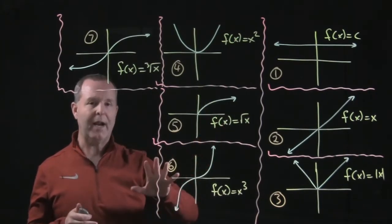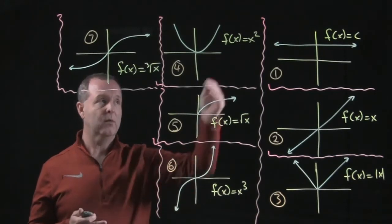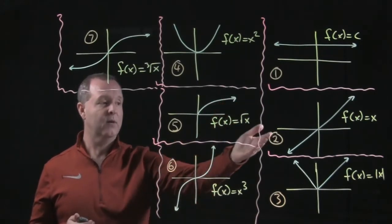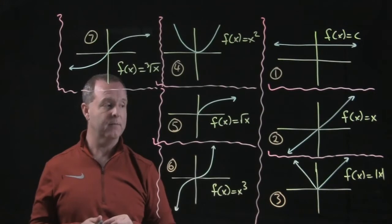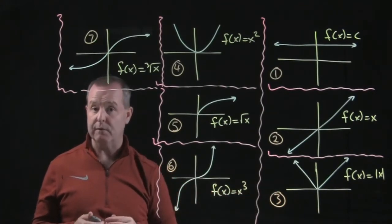Now each of these graphs follows a basic type of function. We have a constant, number one. We have a linear line in number two. Number three, we have an absolute value function.